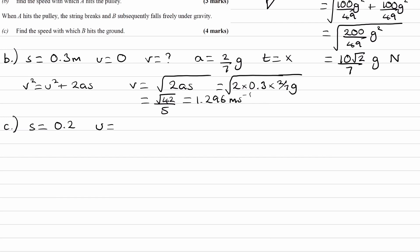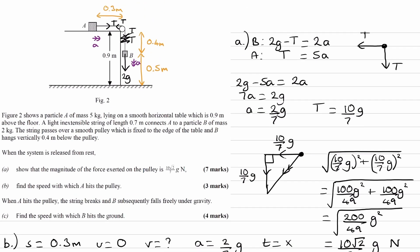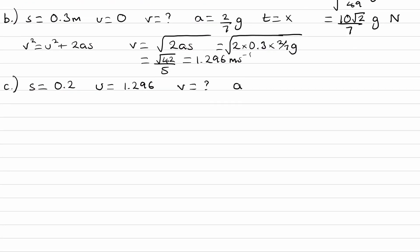The initial speed for this second stage is the speed of A when it hit the pulley, which is also B's speed: u = 1.296 m/s. We're trying to find v when B hits the ground. The acceleration is no longer 2g/7 because there's no more tension—the string is broken. Object B only experiences its weight, so its acceleration is 9.8 m/s². I'm keeping this positive because I'm considering downward as positive. The displacement and initial velocity are both positive, so downward is positive since the object is moving down.